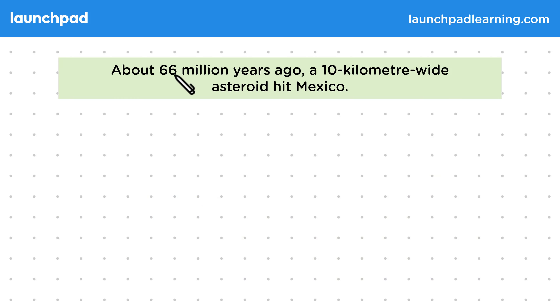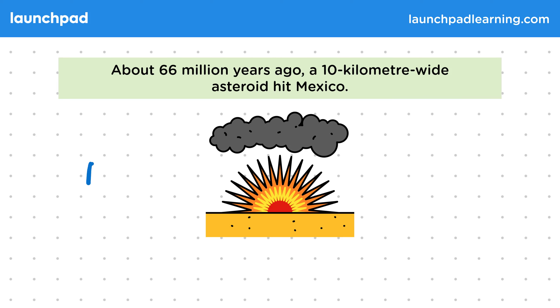About 66 million years ago, a 10km wide asteroid hit Mexico. At the point of the asteroid impact, many organisms would have been killed but not necessarily made extinct.